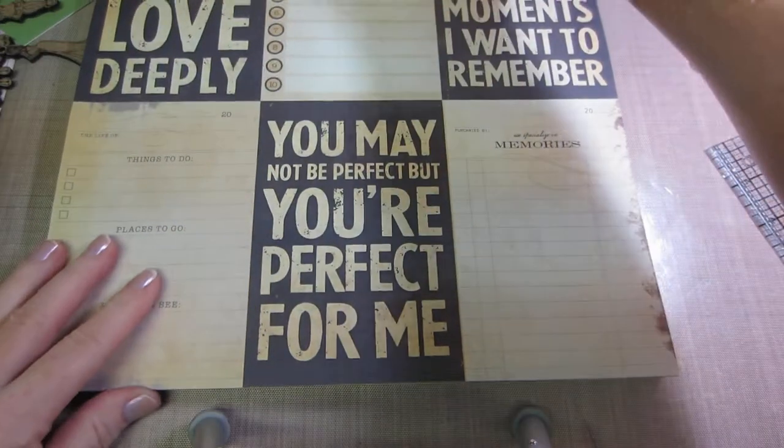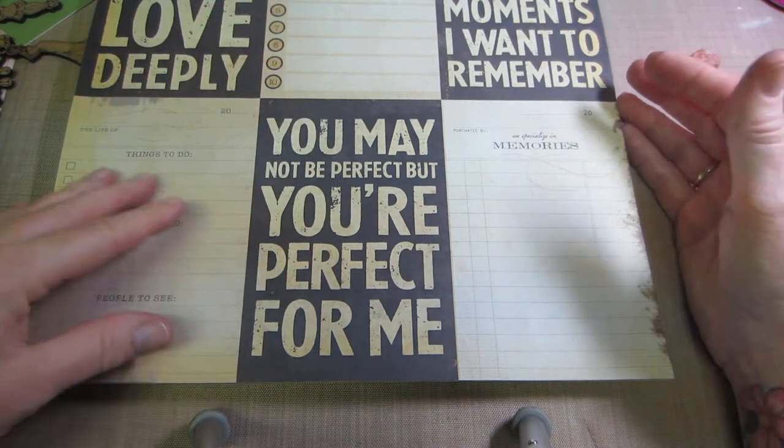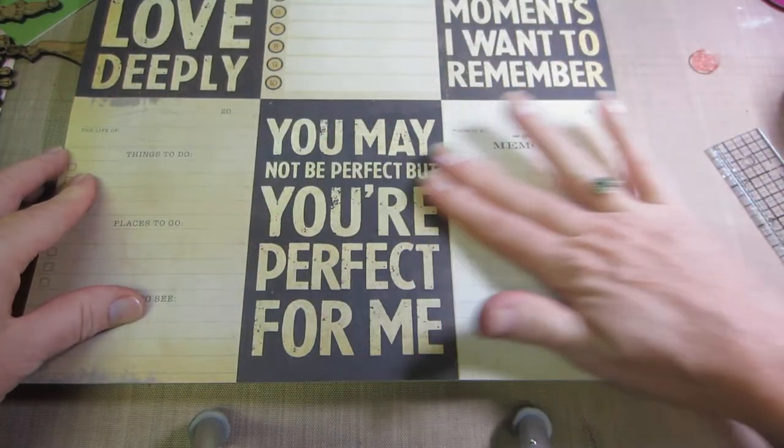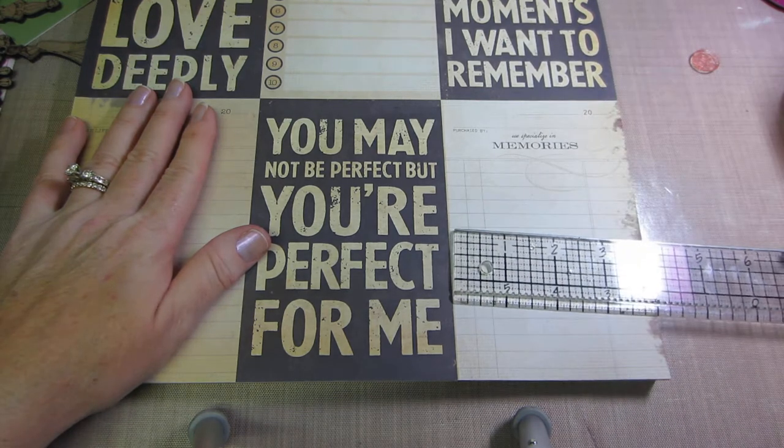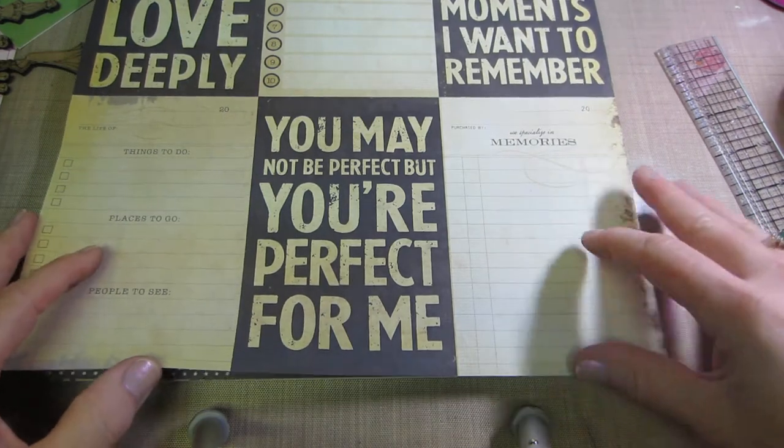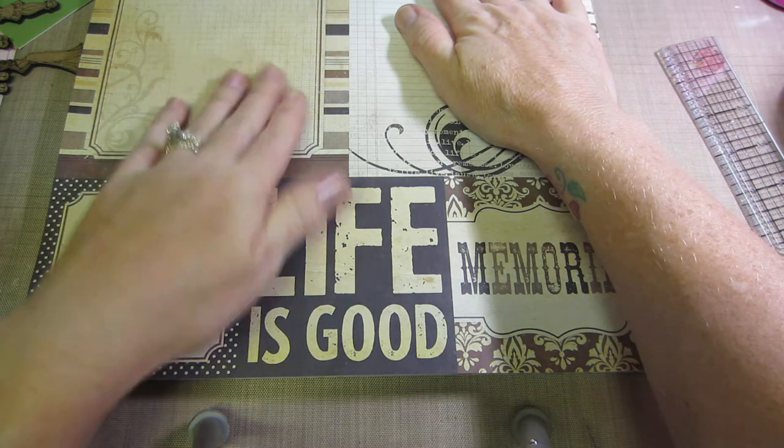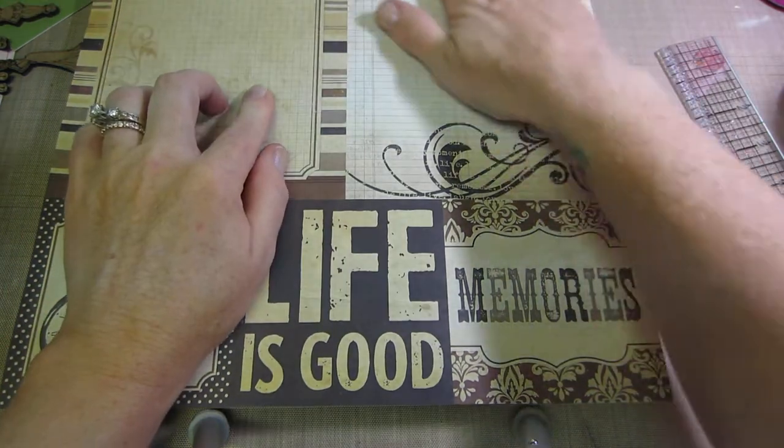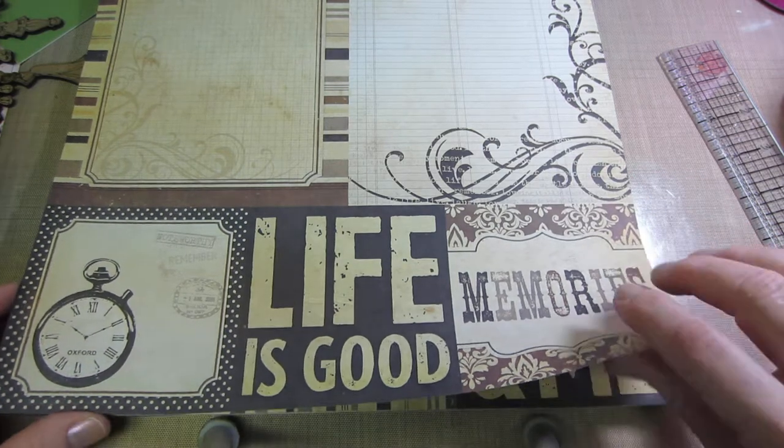But look at all this cut aparts. Live simply, love deeply, you may not be perfect but you're perfect for me. Look at the journaling spots, and these are big, this is six by four. So I love that for junk journal. And look at this, there's graph paper, there's a ledger paper, and it's all in the craft colors. So I love craft, and oh my gosh, I love this paper when I saw it for junk journaling.